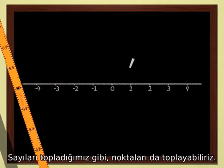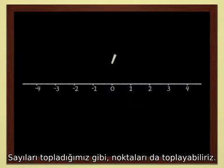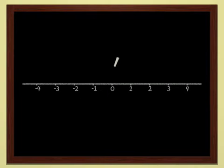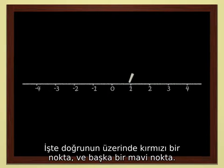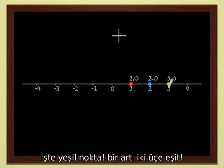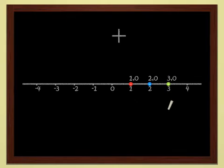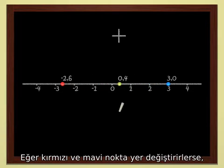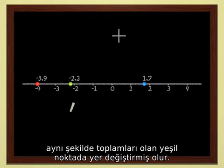Just as we can add numbers, we can add points. Here is a red point on the line and another blue one. Let's add these two points. We get the green point. One plus two equals three. When the red and blue points move, the green point, which is the sum, must move too.